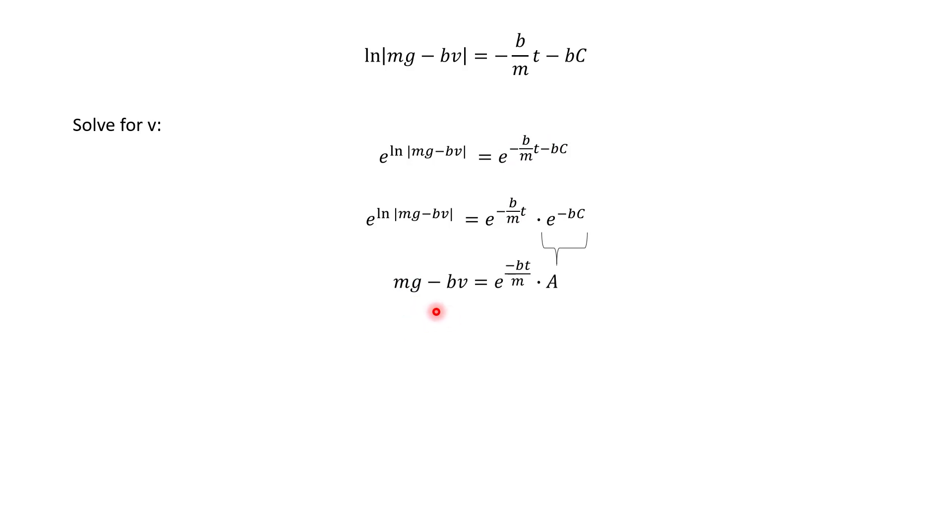And now notice what we have. A couple of things happen here. e raised to the ln of something. The whole reason why we did that is because the e and the ln, they undo each other. They have the same base from your rules of logarithms. And so that's why once you do this, you just are left with the argument mg minus bv. That's why we introduced e in the first place.